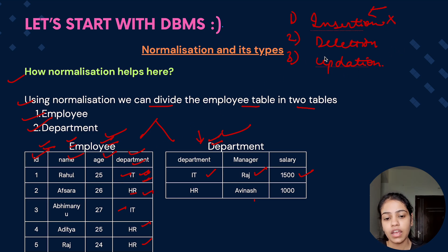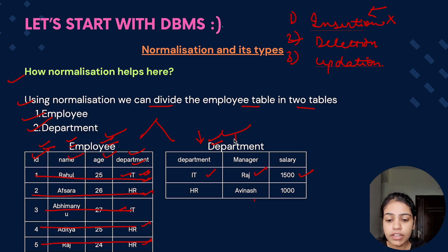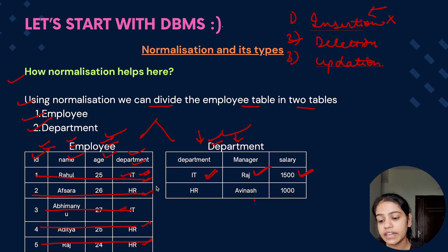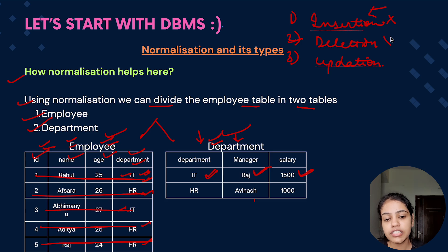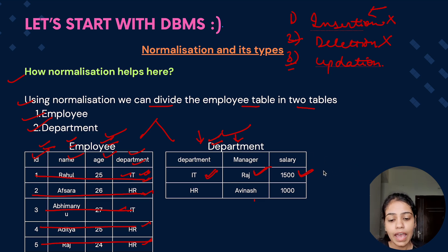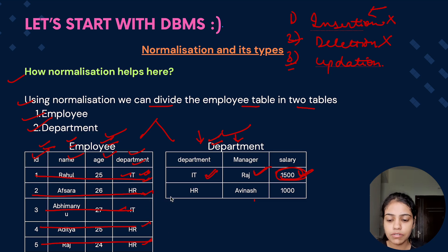For deletion anomaly — even if you delete all records in the employee table, the department table is still there. You can still know the manager and salary for IT department. So you sustain the valuable department information even after deleting employee records. For updation anomaly — if you want to update the salary of HR people, you just need to update it once in the department table, and it will start reflecting for each and every employee. Earlier you needed to update at multiple places, but now with two tables you just update at one place.